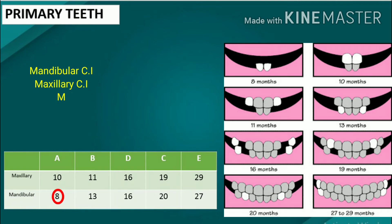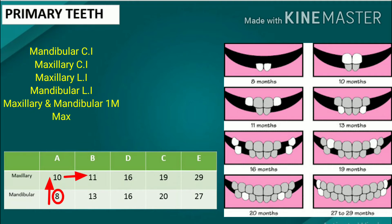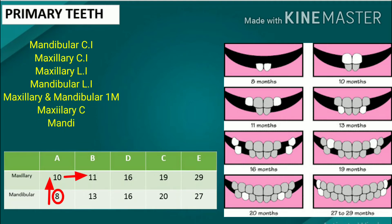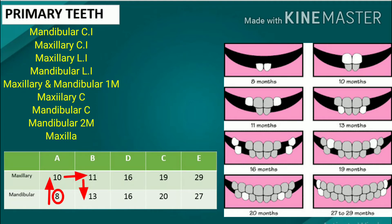The sequence of eruption of the deciduous teeth is as follows: mandibular central incisor, maxillary central incisor, maxillary lateral incisor, mandibular lateral incisor, maxillary and mandibular first molar, maxillary canine, mandibular canine, mandibular second molar, maxillary second molar.